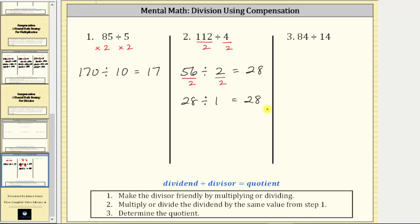And for our last example, we have 84 divided by 14. To make the divisor more friendly because it is even, let's divide the divisor by two. If we divide the divisor by two, we must also divide the dividend by two. 84 divided by two equals 42, and 14 divided by two is equal to seven. And we should recognize this quotient. 42 divided by seven is equal to six, which is also the quotient of 84 and 14.